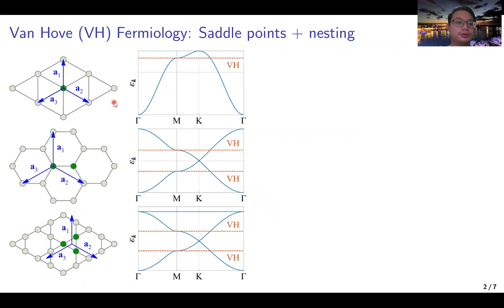Let me begin with an introduction to the systems in our analysis. The hexagonal lattices we consider include the triangular, honeycomb, and kagome lattices. For the triangular lattice, there is a single dispersive band. For the honeycomb and kagome lattices, there are two dispersive bands.